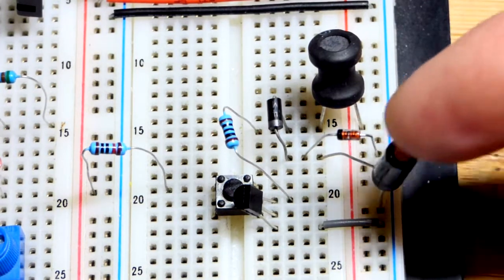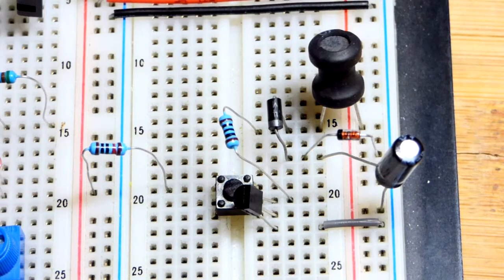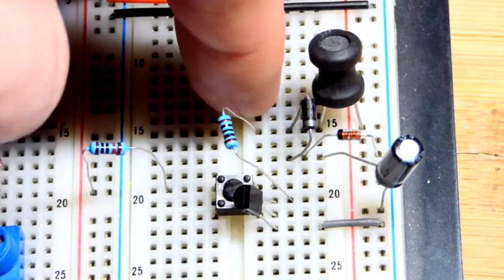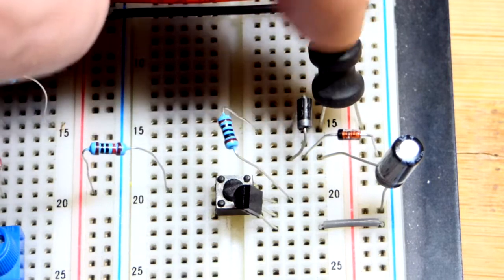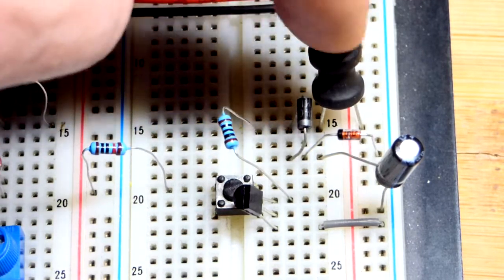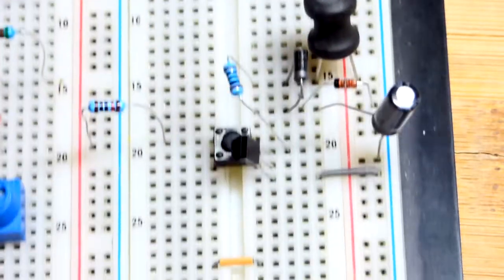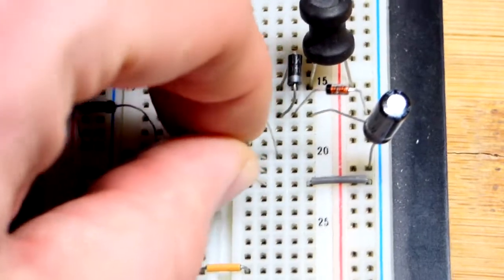So the 100 ohm resistor goes all the way up to where the anode of the diode is and that side of the inductor. And that comes to the transistor. So again, we're a little crowded here. I'm going to move the transistor.